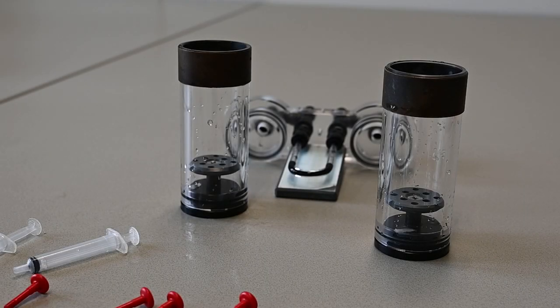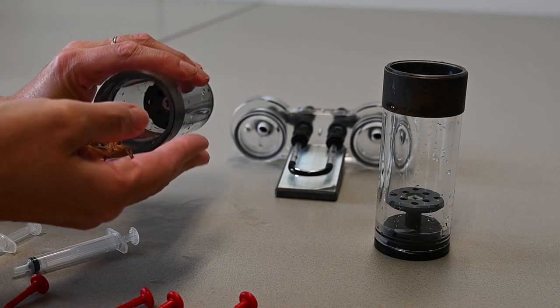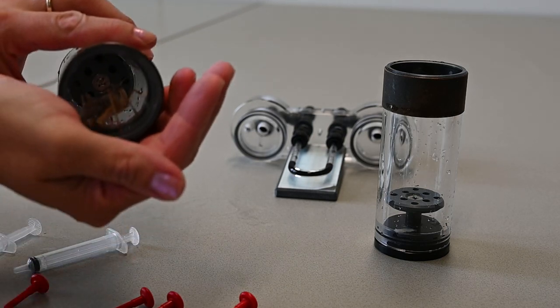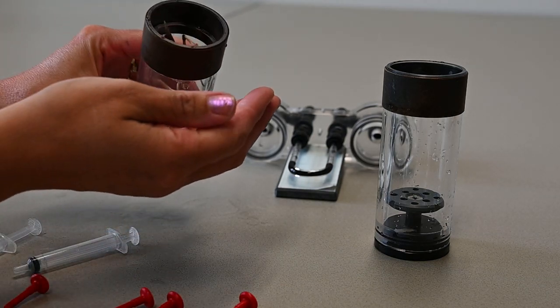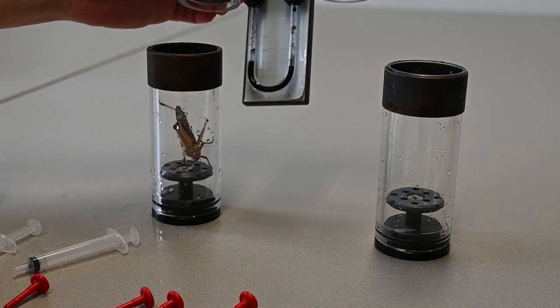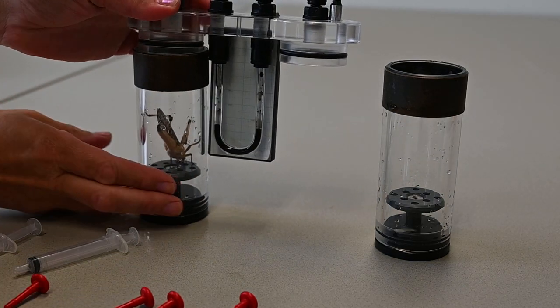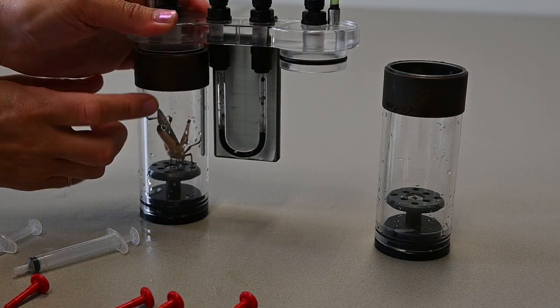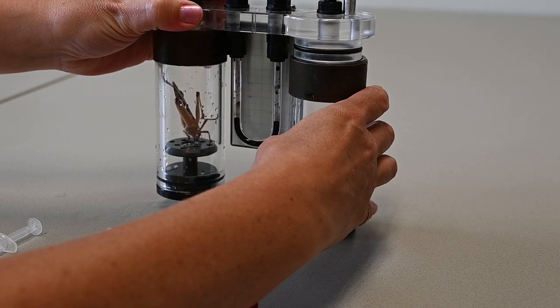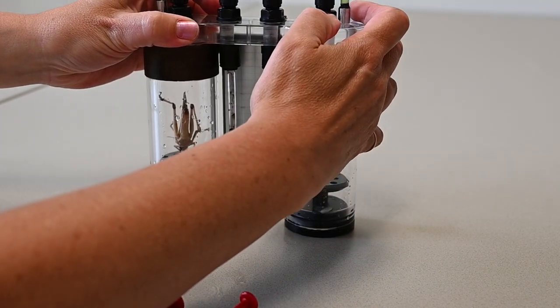The locust is placed head down in the left cylinder. Then the cylinders are attached to the system.